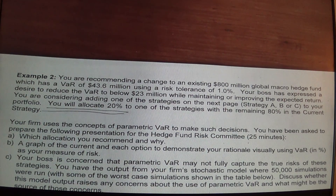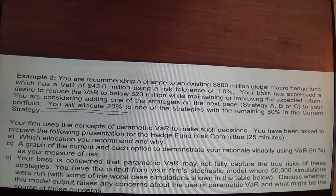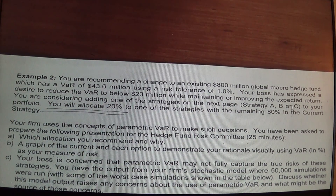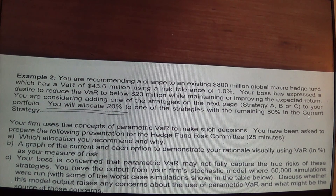In this example you have an $800 million portfolio, a current VAR of 43.6, and a risk tolerance of 1%. Your boss wants to reduce the VAR by a lower $23 million, but she does not want to harm the expected return. You're considering an allocation to A, B, or C. You'll keep your current portfolio but allocate 20% to either A, B, or C — keeping 80% in current and buying 20% of either A, B, or C.